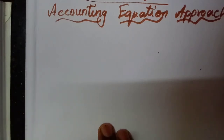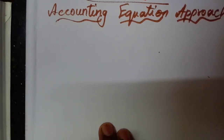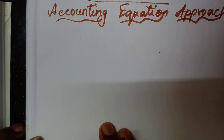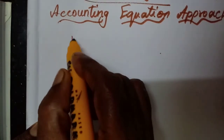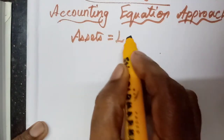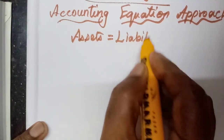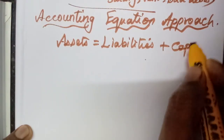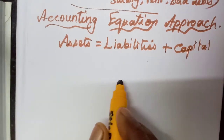Good morning students. How are you all? Have you understood this lesson, this double entry system? The last topic we studied is the accounting equation approach. What is the accounting equation? Assets is equal to liabilities plus capital.